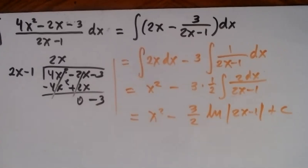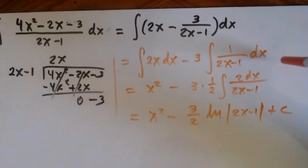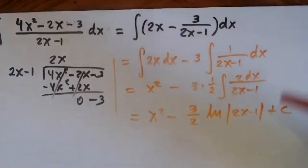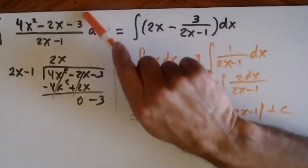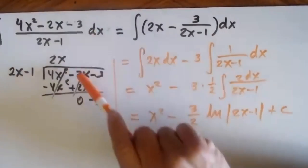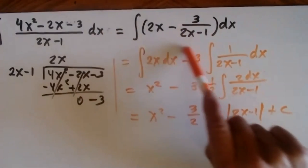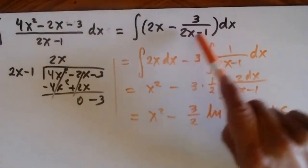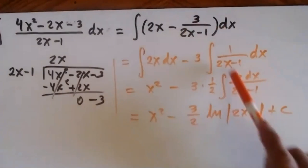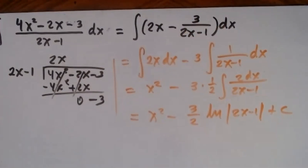It's very possible you'll find integrals like these on the test — there was one like this in the multiple choice. When the top polynomial degree is greater than the bottom, use long division and break it into two parts: one is a power rule integral and one is the natural log integral.